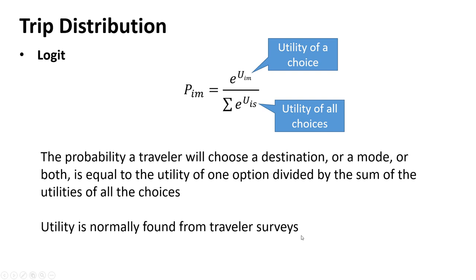How do we know people's utility? We ask them through surveys and track their choices. For example, why did I choose the train to Chicago? I hate finding parking, the loop is stressful, and I like reading on the train. Or conversely, someone might drive because the train doesn't run at the time they want to come home.